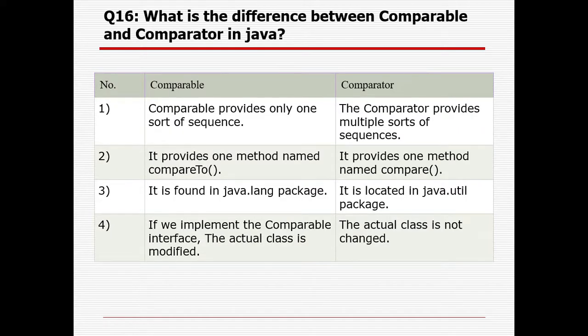What is the difference between Comparable and Comparator interfaces? Comparable provides only one sort sequence whereas Comparator provides multiple sort sequences. Comparable provides the compareTo method whereas Comparator provides the compare method. Comparable is found in the java.lang package whereas Comparator is in the java.util package. Implementing the Comparable interface modifies the actual class, whereas for Comparator, the actual class is not changed.